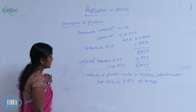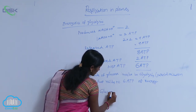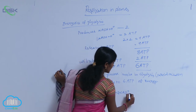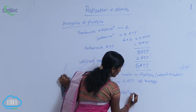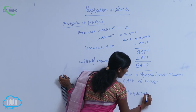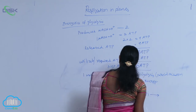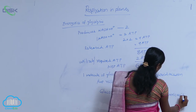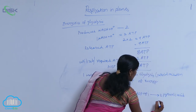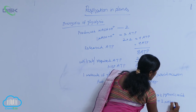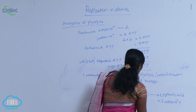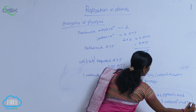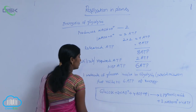The summary reaction of glycolysis: glucose plus two NAD⁺ plus four ADP plus four Pᵢ gives rise to two pyruvic acid molecules, two NADH₂ (NADH + H⁺), and four ATPs are released. This is the summary reaction of glycolysis.